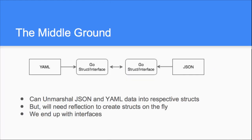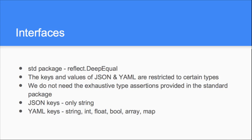We went with the middle-ground approach: converting YAML to a Go struct and JSON to a Go struct, then comparing two Go structs. The problem is whether to convert into a struct or an interface. To convert into a struct I need to know the structure predefined, which means using a lot of reflection to construct structs on the fly. Since I don't know the predefined structure of any response, we decided to go with interfaces. Interfaces are not very fast, take more memory, and involve type assertions — but we didn't have another option.